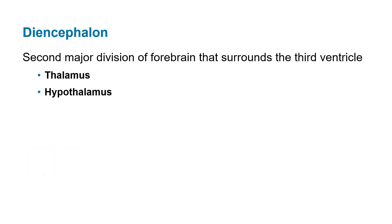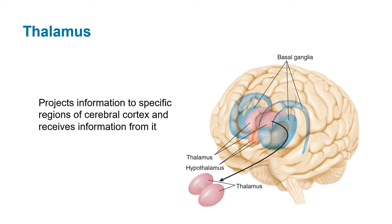The other major division of the forebrain is the diencephalon, made up of the thalamus and the hypothalamus, surrounding the third ventricle. The thalamus projects information to specific regions of the cerebral cortex and receives information from it — thalamus refers to a chamber. It acts as a relay station for sensory information, processing sensory input and sending it to the appropriate areas of the cerebral cortex. It is located underneath the basal ganglia.